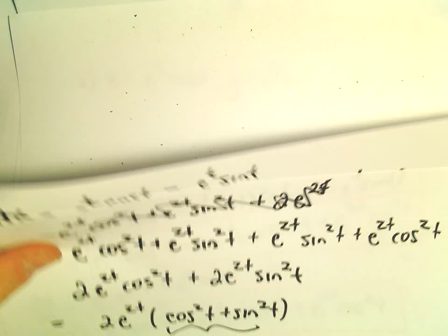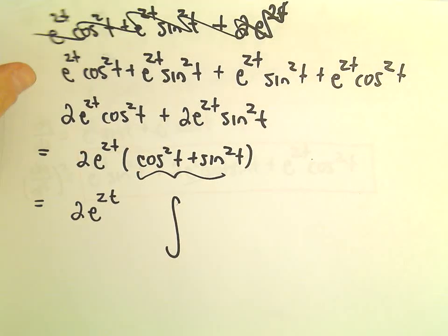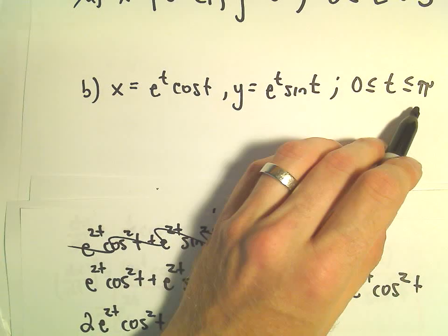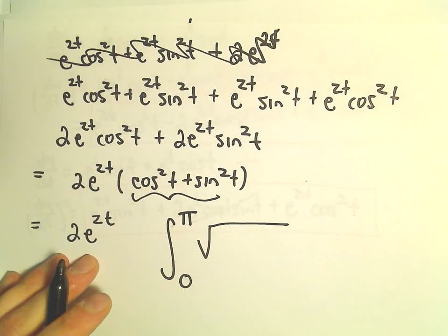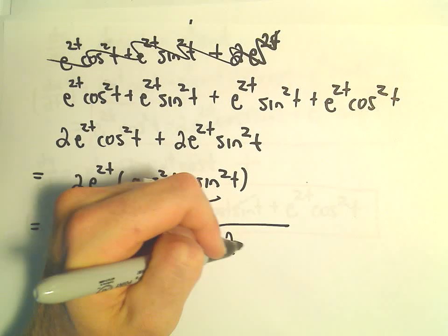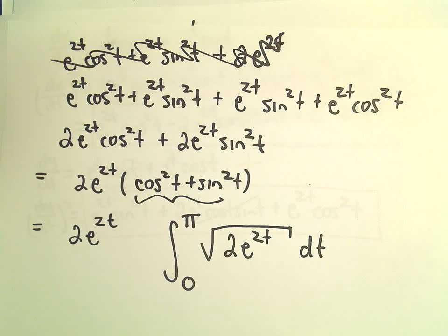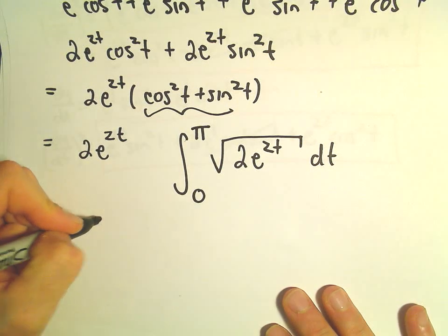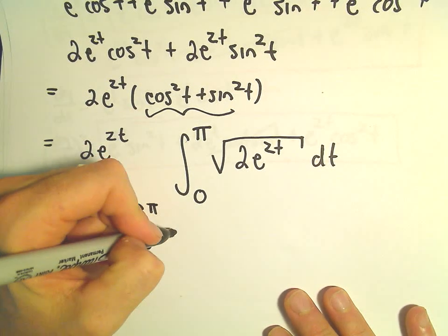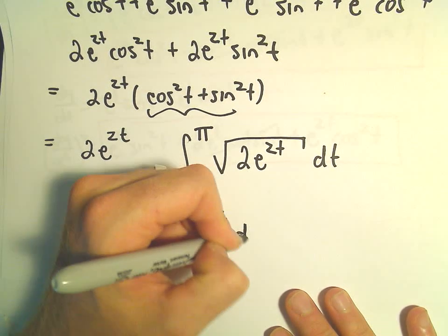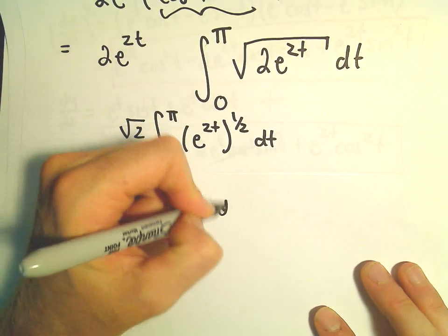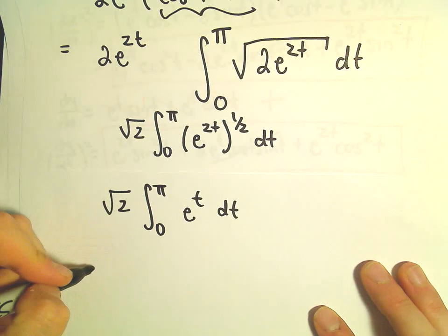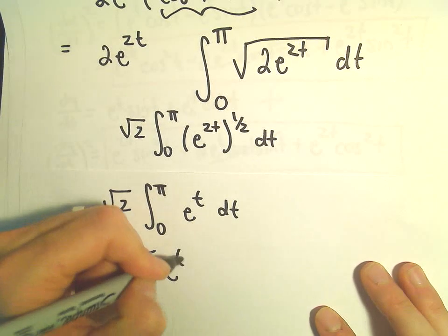We've done most of the hard part. We're integrating from 0 to pi, and the square root of (dx/dt)² plus (dy/dt)² reduces to the square root of 2 e to the 2t. We can break that up as the square root of 2 times the integral from 0 to pi of e to the 2t raised to the one-half power, which simplifies to the square root of 2 times the integral from 0 to pi of e to the t dt. Integrating gives us the square root of 2 times e to the t evaluated from 0 to pi.